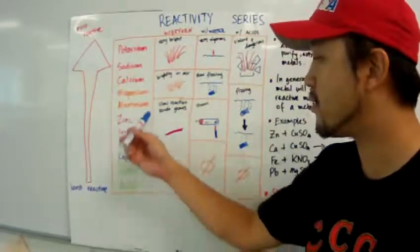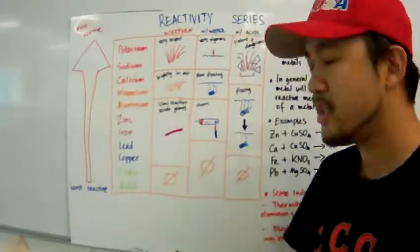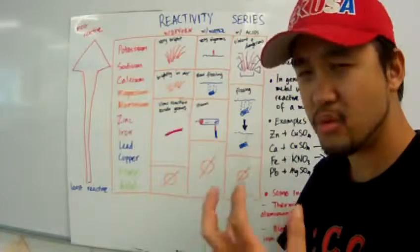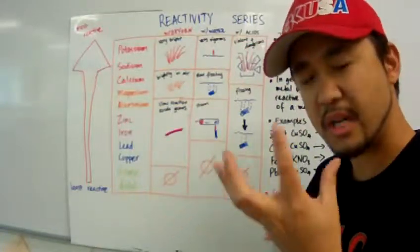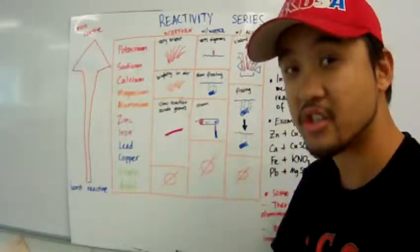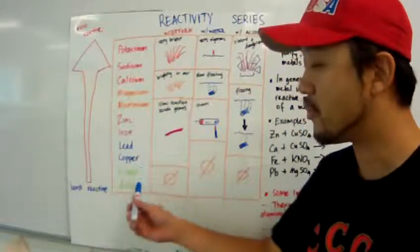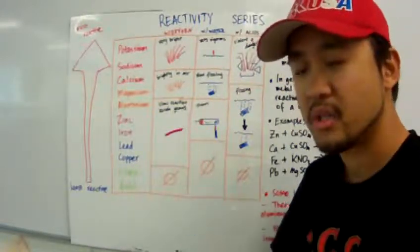And down in the series, from aluminum all the way to copper, it will be slow. It might glow, but it's just a real slow reaction. And your precious metals, such as silver and gold, you'll see nothing.